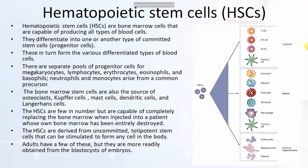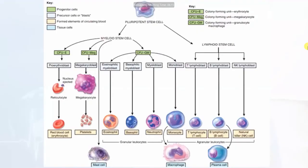HSCs are derived from uncommitted totipotent stem cells that can be stimulated to form any cell in the body; these are more readily obtained from blastocysts of embryos. From lymphoid cells: T cells, NK (natural killer) cells, B cells, and dendritic cells are formed. From myeloid cells: neutrophils, basophils, eosinophils, monocytes, macrophages, and dendritic cells form. From erythroid/megakaryocyte lineage: erythrocytes, megakaryocytes, and platelets are formed. Dendritic cells can form from both lymphoid and myeloid pathways.